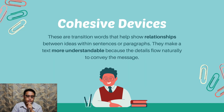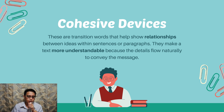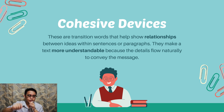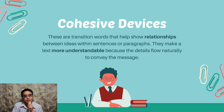Transition signals, or cohesive devices, are words that connect one idea to another. The purpose of transition signals is that they help show relationships — they show relationships between ideas within sentences and paragraphs. They may connect one sentence to the other, or connect one paragraph to the next.